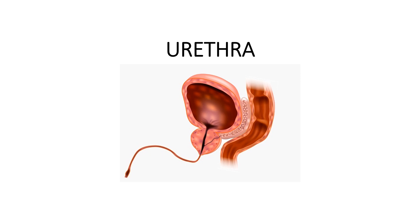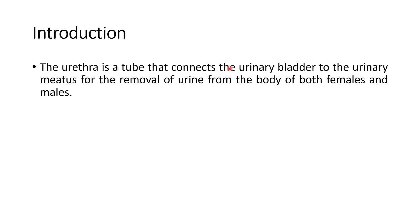This video will explain the structure of the urethra. The urethra is a tube that connects the urinary bladder to the urinary meatus. It is responsible for the removal of urine from the body in both females and males.